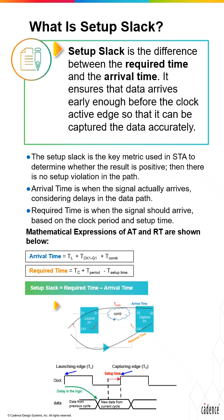The diagram depicts the register-to-register path, illustrating two different paths between the registers: the data path (also called arrival time of data) and the clock path (also called required time of clock). The timing diagram also depicts the timing relationship between these two paths, and demonstrates how data is delayed and comes late, which causes setup time violations.